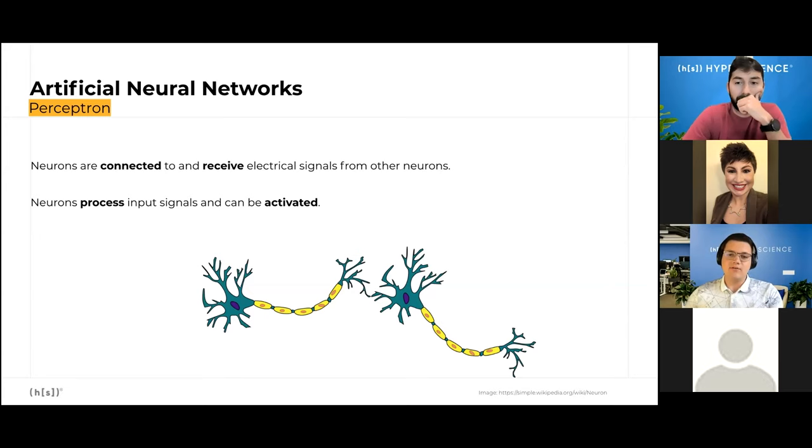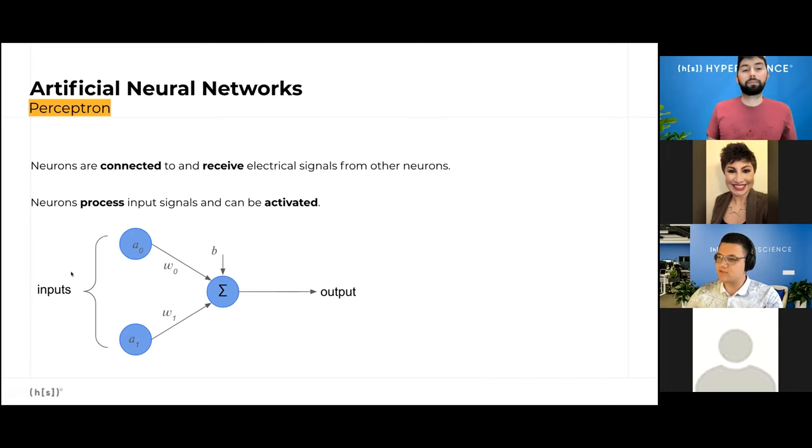So let's see what these neural networks are made of. This is called a perceptron and it is the smallest part of the artificial neural network and it is similar to the neurons in the brain. To sum up the content from the previous lecture, biological neurons have two main properties: they are connected to and receive electrical signals from other neurons, and they can be activated before they process the inputs.